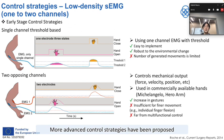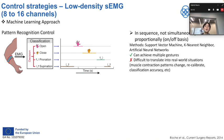To overcome these issues, more advanced control strategies have been proposed. Once multiple EMG channels are implemented — for example, 8 to 16 channels — we can use a machine learning approach. One way is to use a classification method, mapping to different hand gestures depending on different hand muscle activation patterns. This is widely used in the research and commercial sector as it can achieve multiple gestures. However, it is not as intuitive as natural hand movement, and still faces difficulties translating to real-world situations.